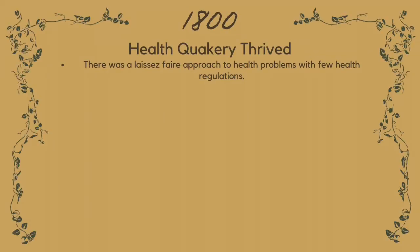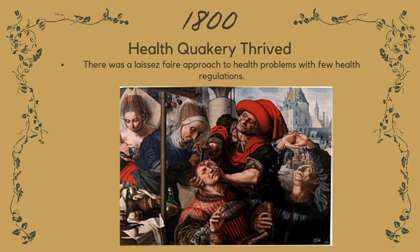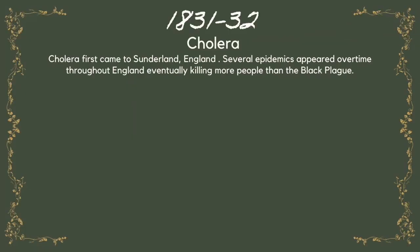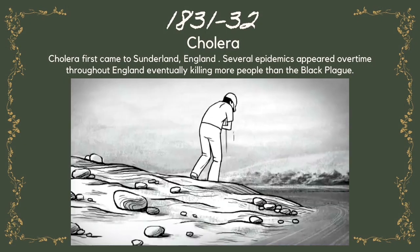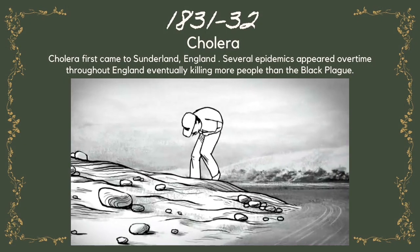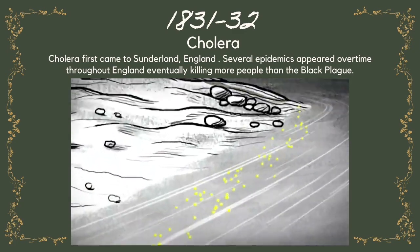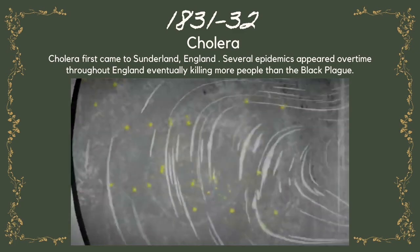1800 — Health quackery thrived. There was a laissez-faire approach to health problems with few health regulations. 1831 to 1832 — Cholera. Cholera first came to Sunderland, England. Several epidemics appeared over time throughout England, eventually killing more people than the Black Plague.